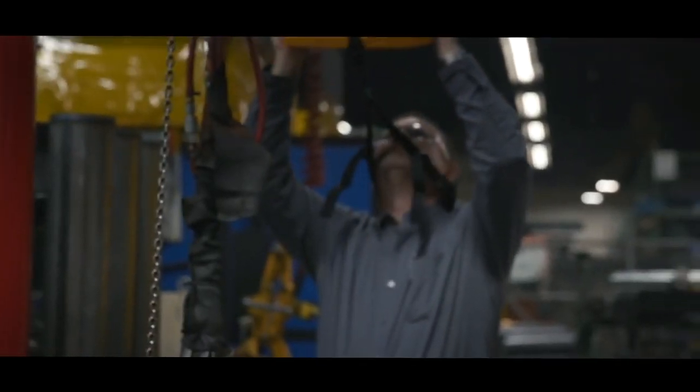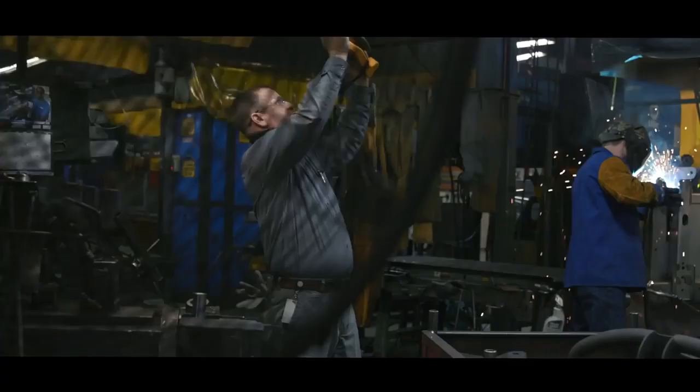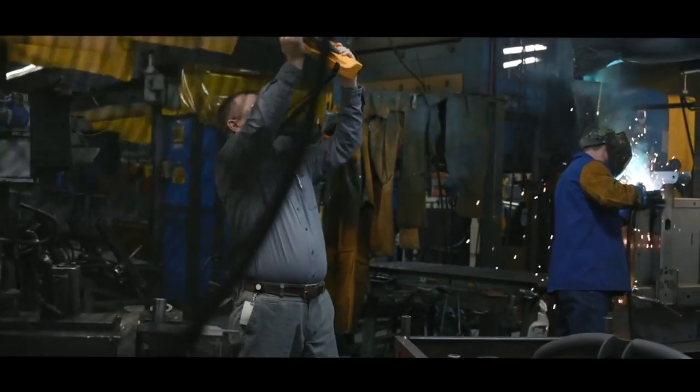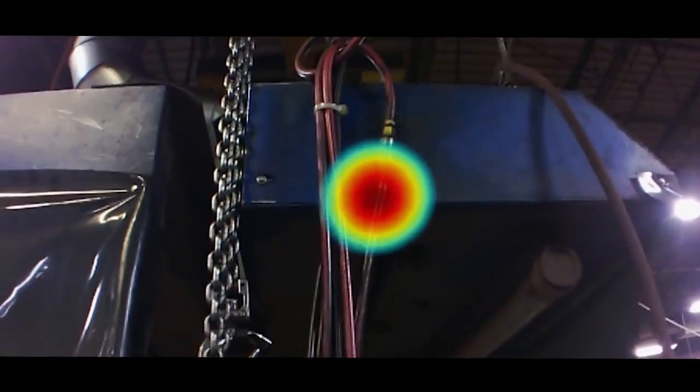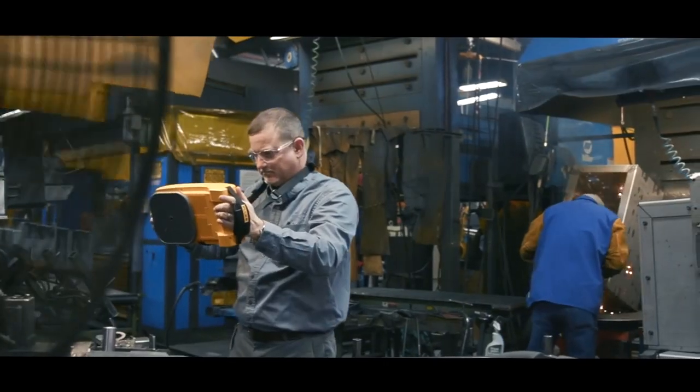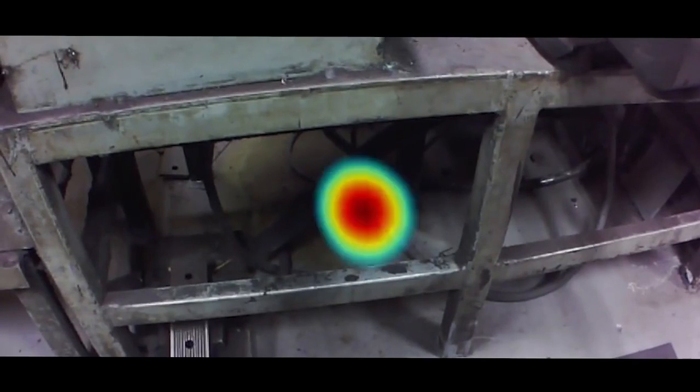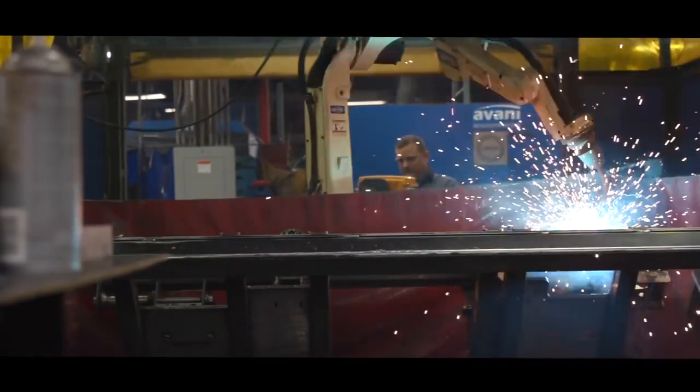The Fluke II900 Sonic Industrial Imager works in noisy places, without having to shut down the line. Scan large areas quickly so you can find leaks much faster and improve your bottom line.